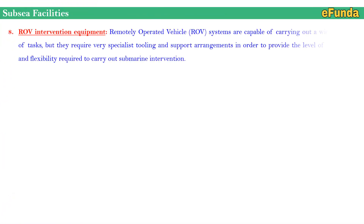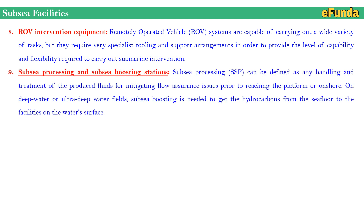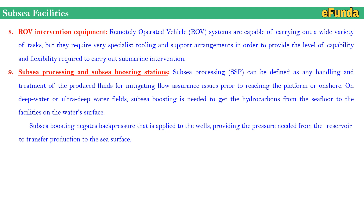Eighth, ROV intervention equipment — remotely operated vehicle (ROV) systems capable of carrying out a wide variety of tasks, requiring specialist tooling and support to provide the capability and flexibility needed to carry out submarine intervention. Ninth, subsea processing and subsea boosting station — subsea processing (SSP) can be defined as any handling and treatment of produced fluid for mitigating flow assurance issues prior to reaching the platform or onshore.